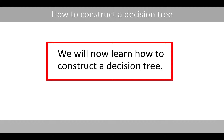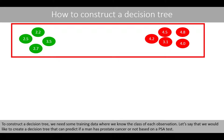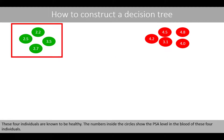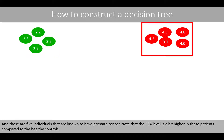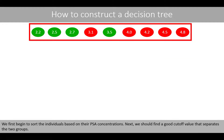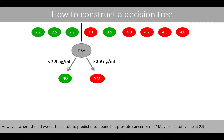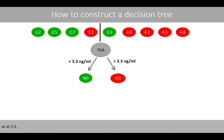We'll now learn how to construct a decision tree. To construct a decision tree, we need some training data where we know the class of each observation. Let's say that we like to create a decision tree that can predict if a man has prostate cancer or not based on a PSA test. These four individuals are known to be healthy, and the numbers inside the circles show the PSA level in the blood. These five individuals are known to have prostate cancer. Note that the PSA level is a bit higher in these patients compared to the healthy controls. We first begin to sort individuals based on their PSA concentrations, and we should find a good cutoff value that separates the two groups. Where should we set the cutoff value — maybe at 2.9, or 3.3, or 3.75?